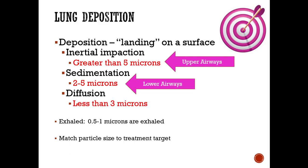Diffusion involves particles less than three microns—the really small ones—and these actually make it all the way down to your alveoli. Given all the twists and turns to get that far, these very small particles are able to diffuse through potential barriers and walls.